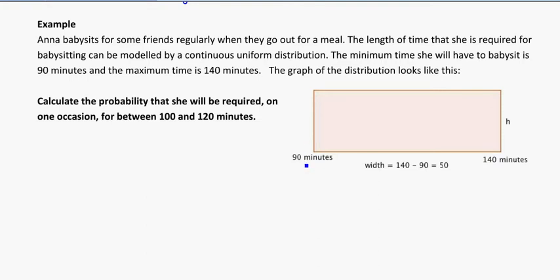The graph of the distribution looks like this. So I have my min time and my max time. Now the first thing I'm going to need to do before I calculate any of the probabilities that they're going to ask for is find the height.